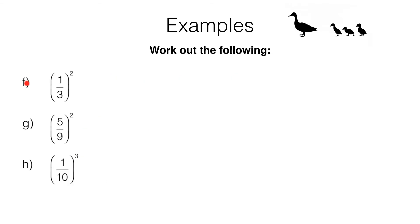In question F we need to work out 1 third to the power of 2, or 1 third squared as we would more commonly say it. 1 third squared is simply 1 third multiplied by 1 third. Multiplying fractions is easy — we multiply our numerators: 1 times 1 is 1, and we multiply our denominators: 3 times 3 is 9, so we get an answer of 1 ninth.